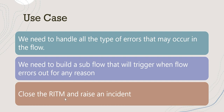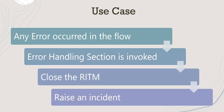In the sub flow, we will be closing the RITM so that everyone is aware — including end users or those who raised the request on behalf of someone else — that the request has been closed due to an error. We will update the work notes and raise an incident for the service desk team, who will redirect that ticket to the technical ServiceNow team or whoever is managing that catalog item. So in summary: any error in the flow triggers the error handling section, we close the RITM, and we raise an incident.